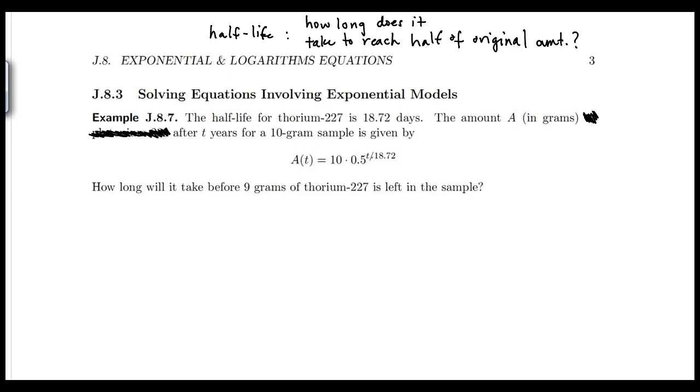So the T over 18.72 is the exponent, 0.5 is the base, and 10 is a coefficient of all of this. It is not attached to the half, they are totally entirely separate.